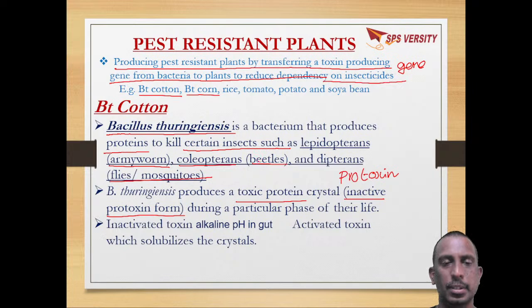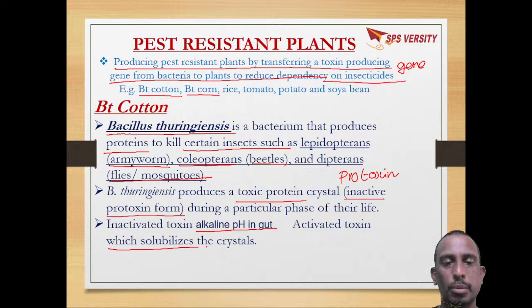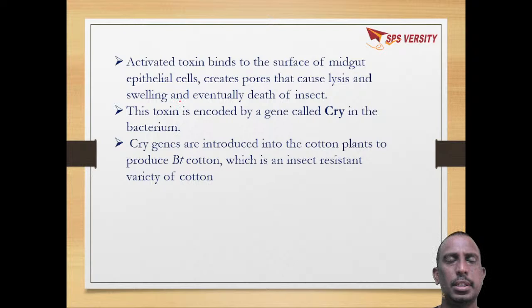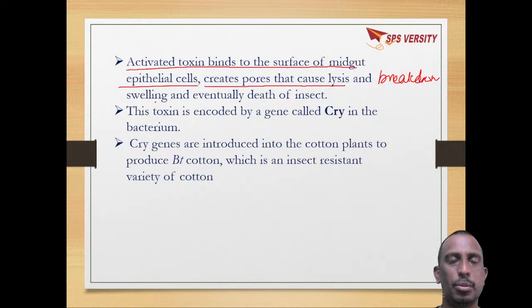When this inactive toxin is taken up by insects, due to the alkaline pH in the gut it gets activated and solubilizes the crystals. The activated toxic protein binds to the surface of the midgut epithelial cells, producing pores that cause cell lysis, swelling, and eventually death of the insect.